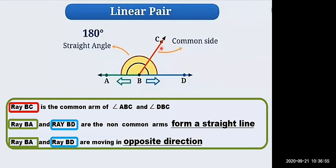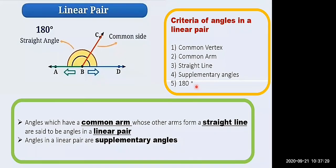Ray BA and ray BD are the non-common arms forming a straight line. They are moving in opposite directions — left and right. Angles which have a common arm whose other arms form a straight line are said to be angles in a linear pair.